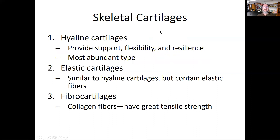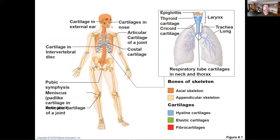There are three types of cartilage in the body: hyaline, elastic, and fibrocartilage. Hyaline cartilage is the most abundant type and provides support, flexibility, and resilience. If you feel your trachea or your ribs as they connect to the sternum, that's all hyaline cartilage. Elastic cartilage is more elastic but supportive, and fibrocartilage has more collagen and more tensile strength. There's a nice image from the book that shows a roadmap of where these cartilage types are located.